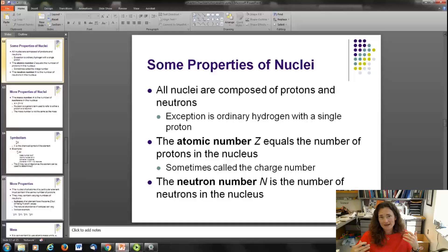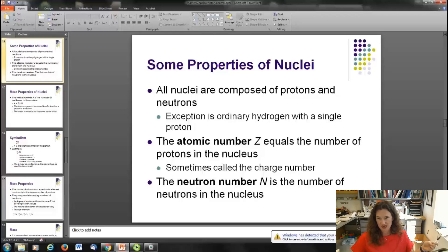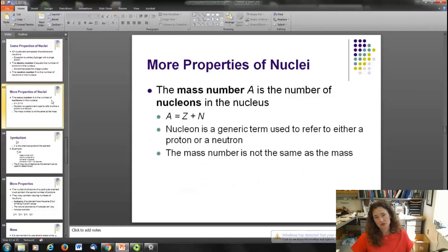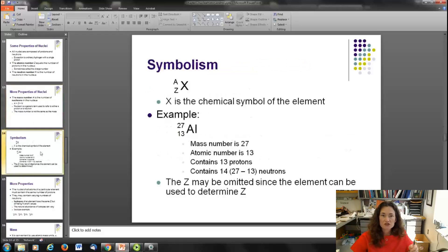Now to the less exciting stuff than the history, stuff that hopefully you've probably already heard, but it never hurts to say it again. Some properties of nuclei. All nuclei are composed of protons and neutrons. The exception is ordinary hydrogen, which just has the single proton. The atomic number Z is the number of protons in the nucleus. This is also sometimes called the charge number. The neutron number N is the number of neutrons in the nucleus. Most of the time, though, we just use the mass number and the atomic number and hope that people can subtract. The mass number A is the number of nucleons, which is the sum of the number of protons and neutrons. It's not the same as the mass, as we'll talk about later when we discuss binding energies.